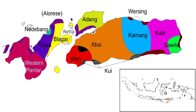Questions. Writing system. The Blagar language uses the 26 letters of the ISO Basic Latin alphabet, and has two digraphs: ing and ng. C, Q, X, Z, and C are only used in foreign place names and loanwords. Another writing system is also used, which is phonemic and is similar to the writing system of Indonesian.